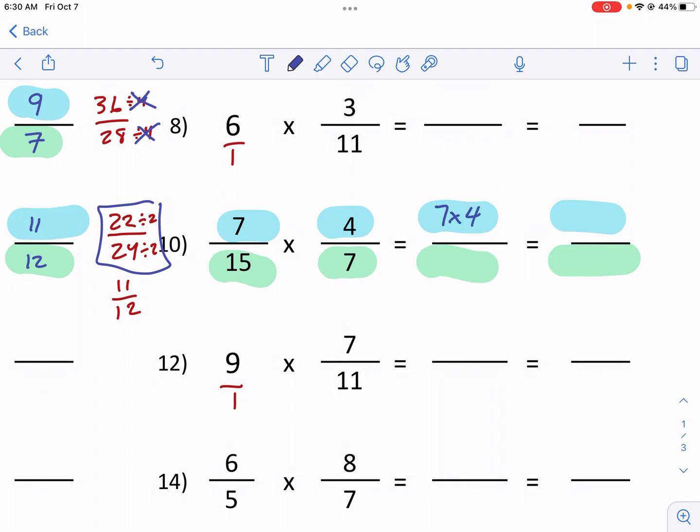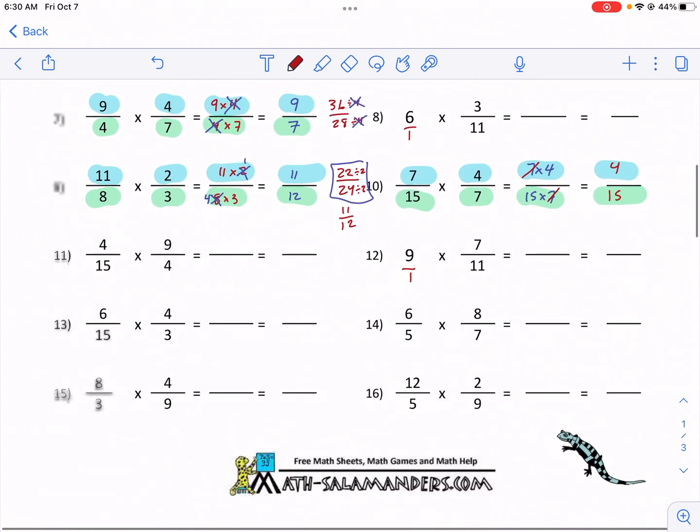15 times seven. Notice how we have the same number in the top and bottom. We have a seven here, seven there. So we get four over 15. That's probably the easiest way to do it.